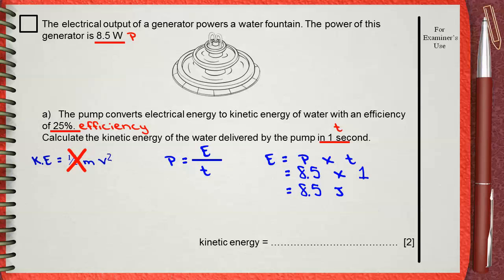But actually, this is the electric energy input to the pump. Since the efficiency of the pump is 25% and the pump converts electrical energy to kinetic energy, this means that the kinetic energy is 25% of this number, which is 8.5. So, the kinetic energy produced by the pump is 2.125 joules. This is our kinetic energy.